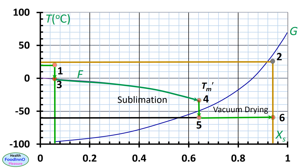We can have vacuum drying in this part since there is no ice and water is the unfreezeable water. This process of drying would be very slow since it is operated at low pressure and the sample is very viscous. We are operating this part in the glassy system, therefore less damage to the apple slice could occur. We are now reaching final moisture at point 0.6 and then we can move to point 0.2 at the storage temperature 25 degrees C. The final sample at point 0.2 in the state diagram is below the glass transition line.